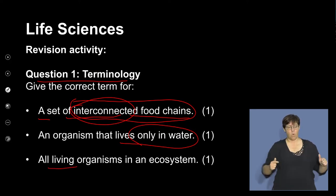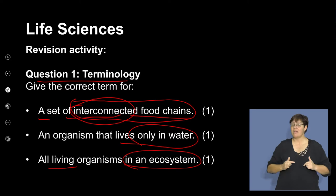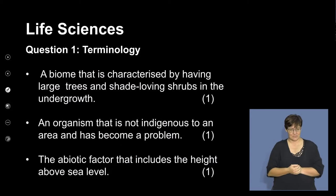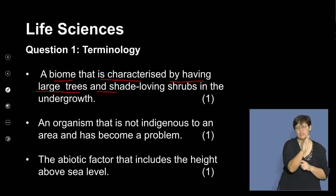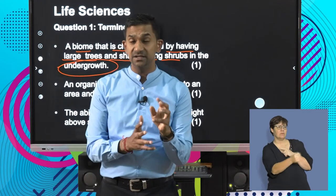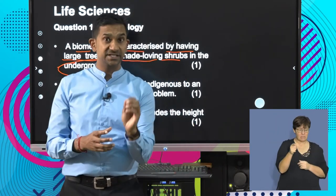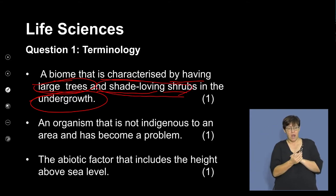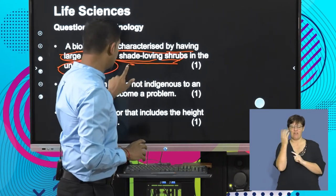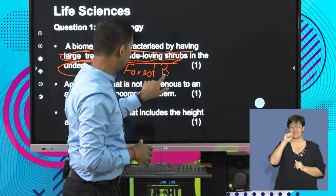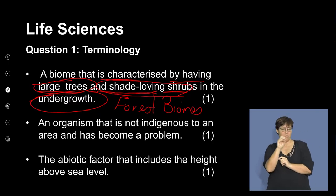The next term is all living organisms in an ecosystem. The concept of living refers to biology — so the biotic components that we refer to in an environment are the living components. Next, a biome characterized by having large trees with shade-loving shrubs in the undergrowth. Here we're looking at shade-loving large trees which support undergrowth of plants that enjoy the cool. This would be a forest biome, where plants that enjoy the shade grow right at the base of the forest.